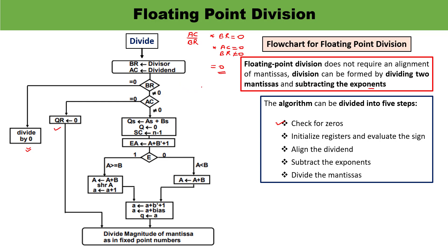The next possible condition: when AC is non-zero and BR is also non-zero, then you need to follow this particular step. First step is complete, you have checked for the zeros. BR is non-zero, AC is non-zero.